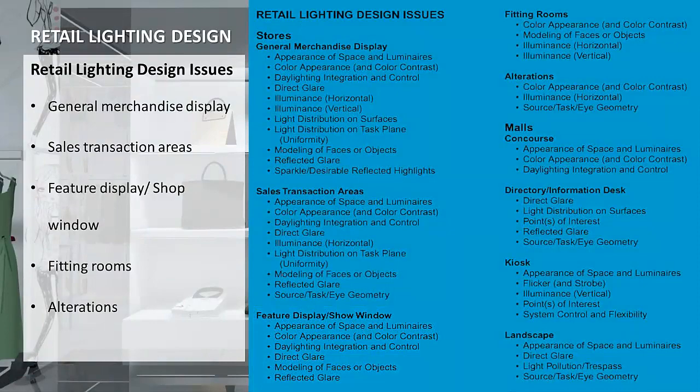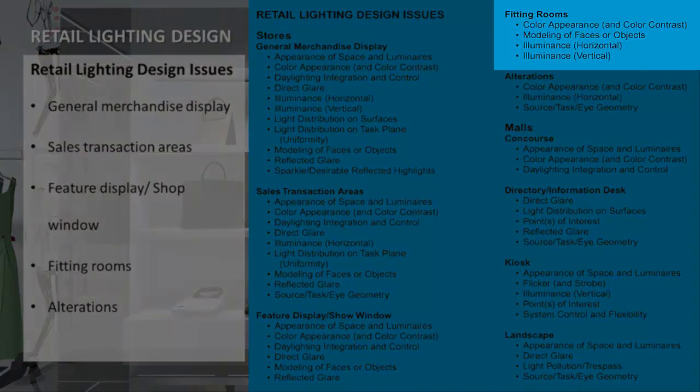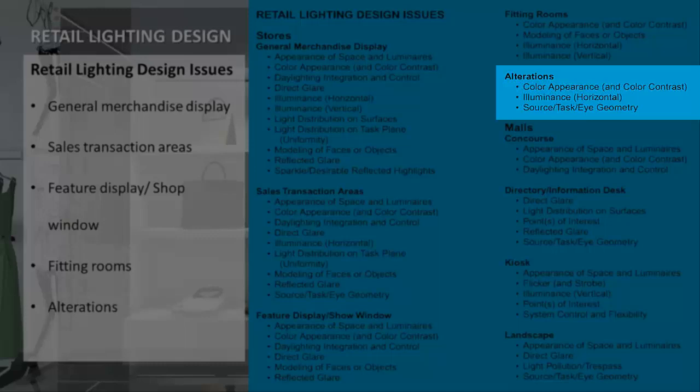For fitting rooms, the lighting design issues are: Color Appearance and Color Contrast, modeling of faces or objects, illuminance horizontal, and illuminance vertical. For alterations rooms, the lighting design issues are: color appearance and color contrast, illuminance horizontal, and source, task, eye geometry.